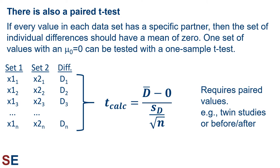There is also a paired t-test that is more powerful than the previous three. If every value in each dataset has a specific partner in the other, then the set of individual differences should have a mean of zero if the population means are equal. We can then think of this set of differences as a set of values with a hypothetical population mean of zero, which can be tested with a one-sample t-test. We would take each value in dataset 1, pair it up with its partner from dataset 2, and calculate a difference value, then use that set of differences to create a t-calculated value. This type of test requires a very specific experimental design with paired values that match up — for example, twin studies or before-and-after comparisons. You can't create a paired test by arbitrarily deciding that certain values pair up with others; there has to be something in the experimental design that justifies the pairings.